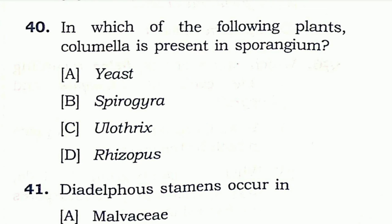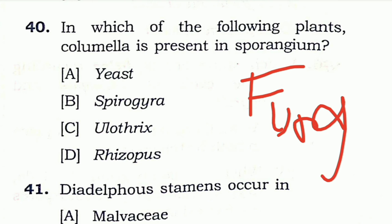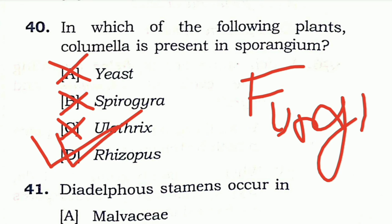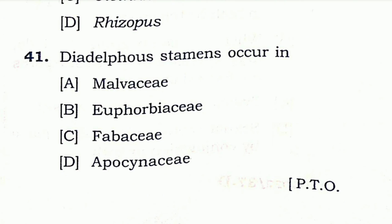Question 40: In which of the following plants is columella present in the sporangium? Columella is present in the sporangium of some fungi. The four options are not fungi except Rhizopus. So the right answer is Rhizopus.